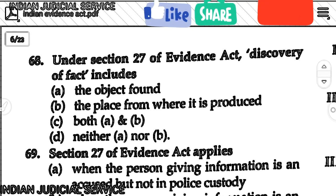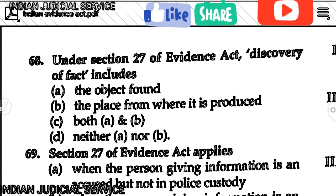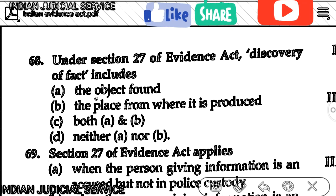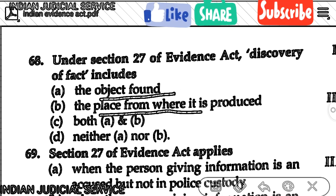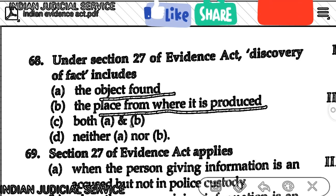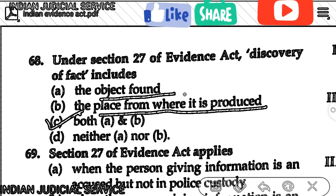Question number 68: Under Section 27 of the Evidence Act, does 'discovery of fact' include the object found and the place from where it is produced? The answer is option C — both A and B — meaning both the object found and the place from where it is produced are included.